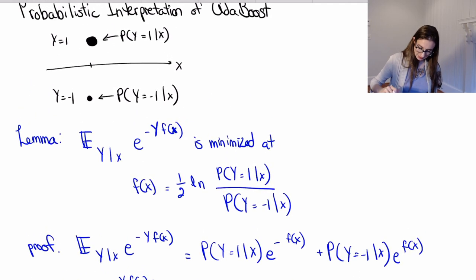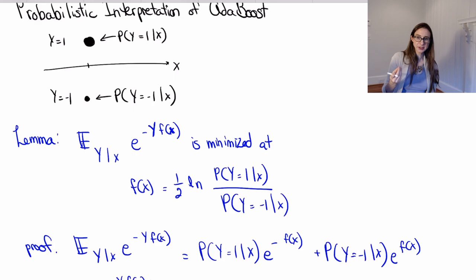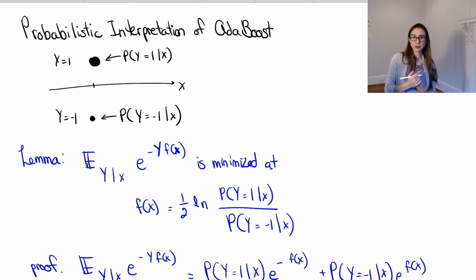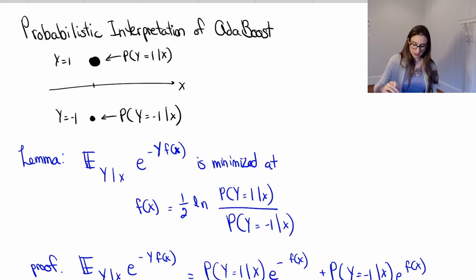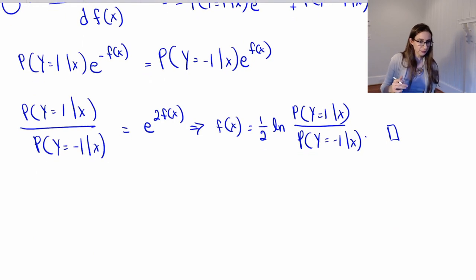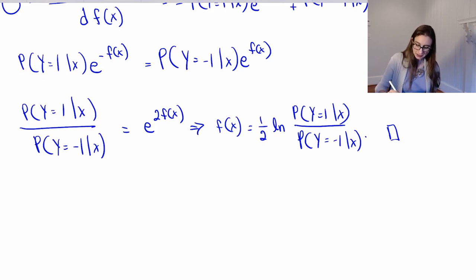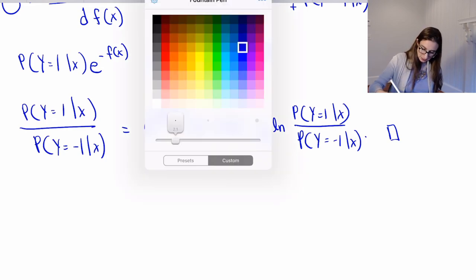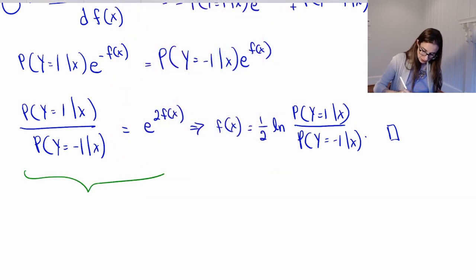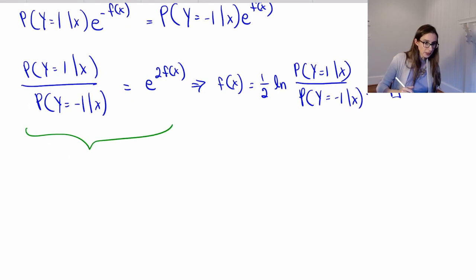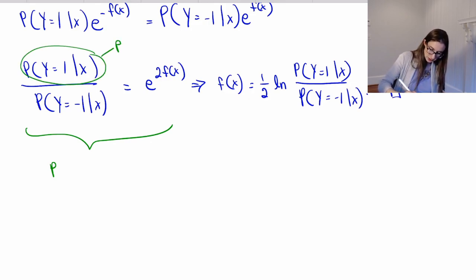We're not done yet. We've proven the lemma, but we haven't given the full probabilistic interpretation. What I mean is: I want an estimate for the probability that y equals 1 given x, expressed in terms of my model f(x). So let's figure that out by solving for P(y=1|x) in terms of f(x).